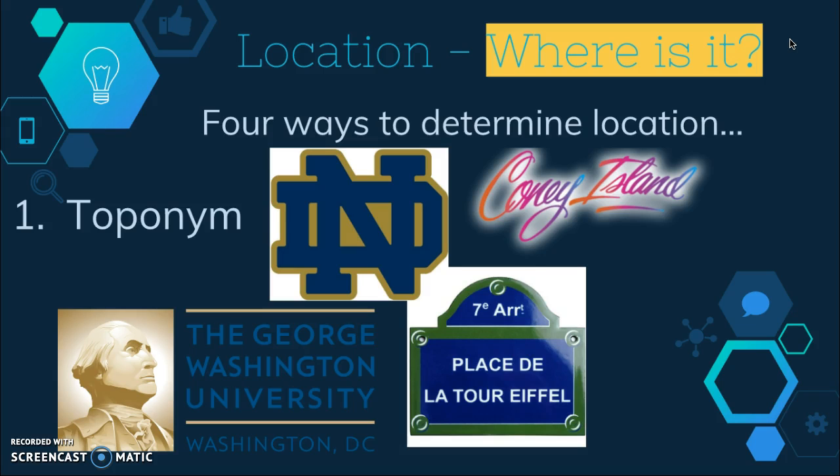The first one is the toponym. This is just the location's name. This is very straightforward, but it's important to know that toponyms are oftentimes reflective of the culture or the history of a particular location. So it may indicate the origin of settlers, a specific founder, a dominant religion, or the physical environment in that area.